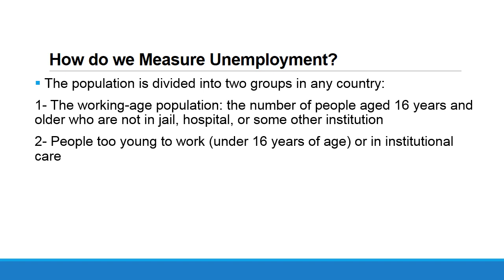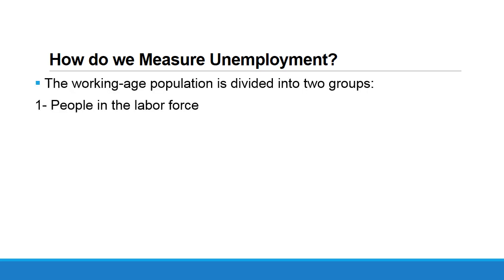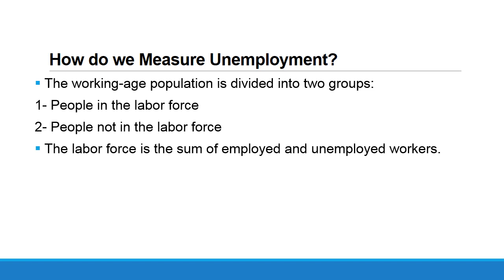Those in the working age population will be available to enter the labor force. The working age population is divided into two main groups: people in the labor force and people not in the labor force. People in the labor force are those who are available, looking, and able to work. People not in the labor force include the disabled, full-time students, and housewives. The labor force is a sum of employed and unemployed workers.